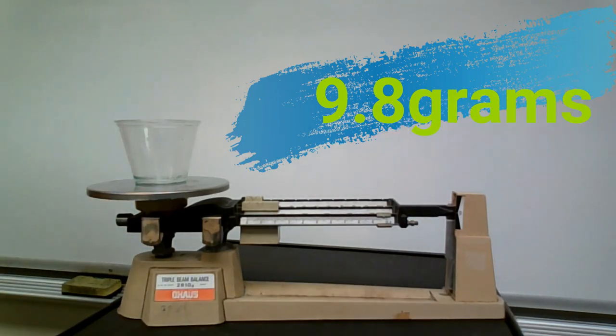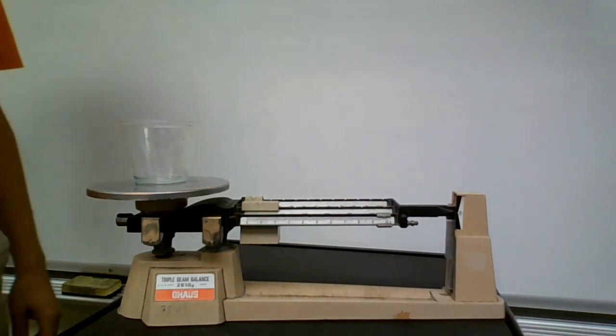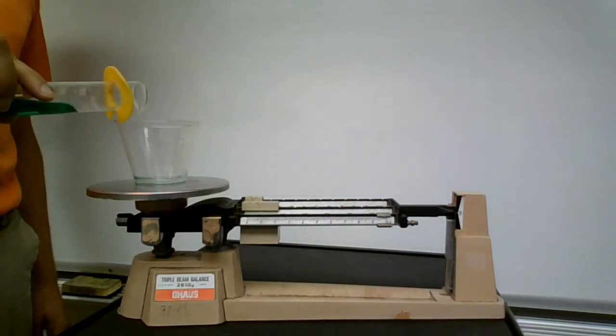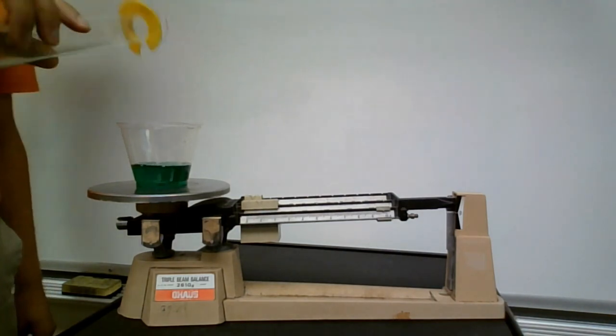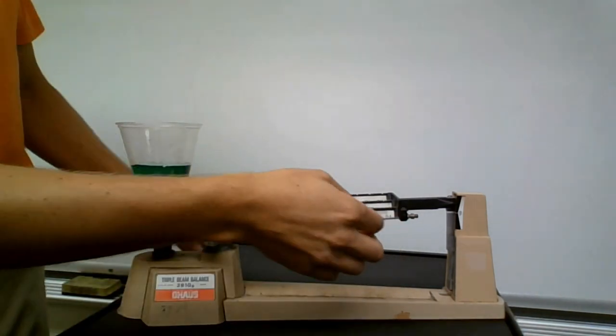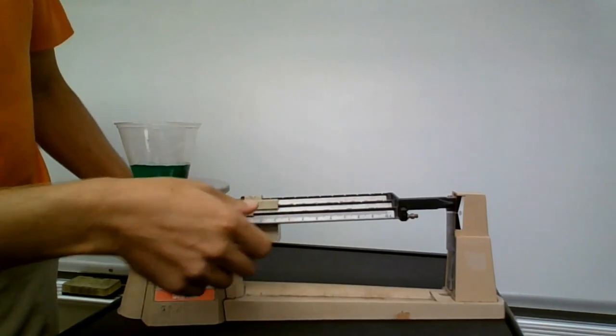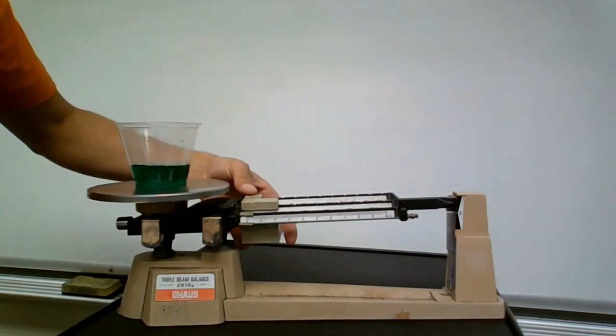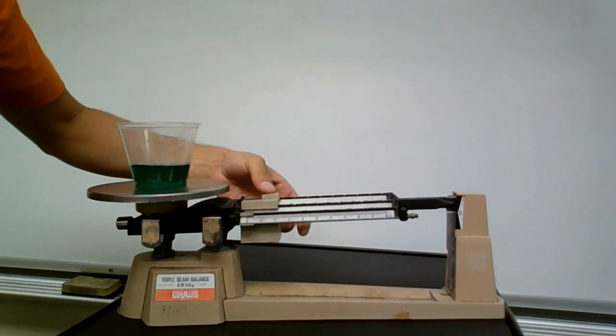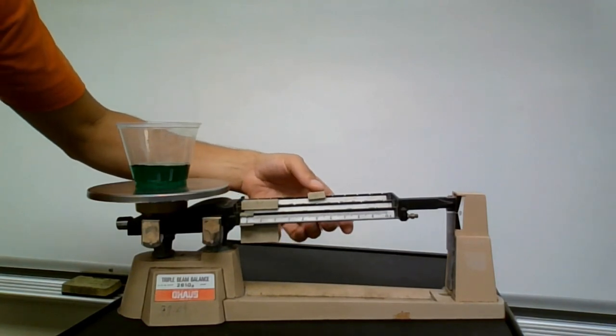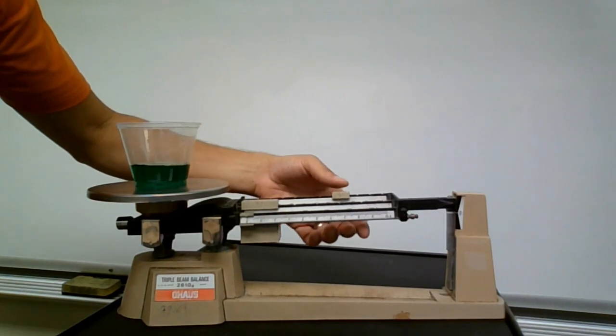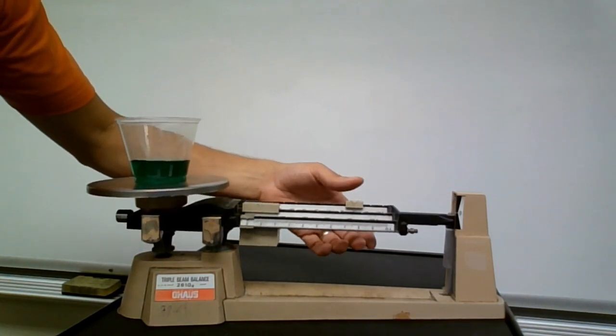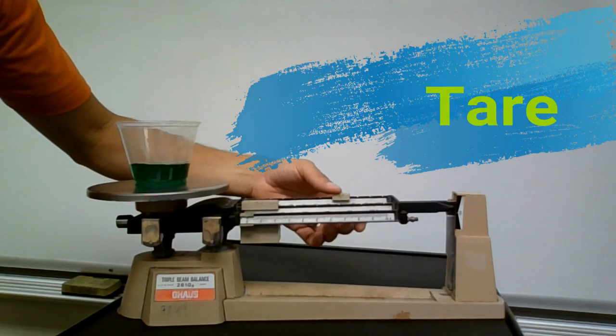Now that we have the container mass, we are going to add our liquid, or maybe it might be our chemical, our dry substance, into the container. And let's not forget, we need to move our riders back to zero. So now let's find the measurement. And we're finding the measurement of, in this case, the liquid and the container. That's going to be important because we are going to have to go back, once we find the measurement, and subtract the mass of the container. And this is called tare, T-A-R-E.